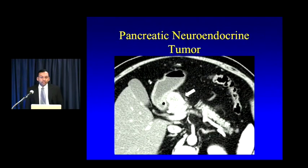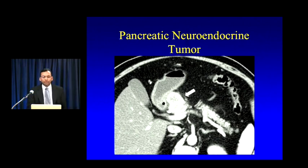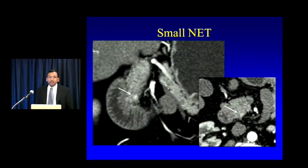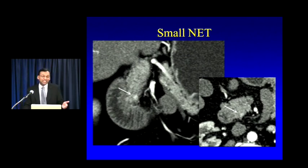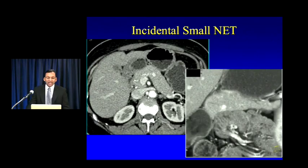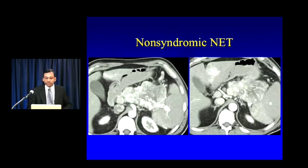Here's a classic pancreatic neuroendocrine tumor — well-circumscribed, well-marginated, with avidly hypervascular enhancement on arterial phase images and absolutely no upstream pancreatic atrophy, which would be quite unusual for an adenocarcinoma in this location. We're increasingly identifying small neuroendocrine tumors incidentally as we do more arterial phase imaging — here's a small incidental NET, probably six to seven millimeters, found in a patient being scanned for a renal mass. Another example illustrates that you still need to look for hypervascular lesions on the venous phase, as some NETs are diagnosable there as well.